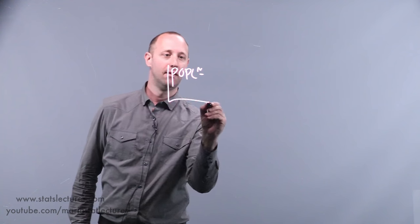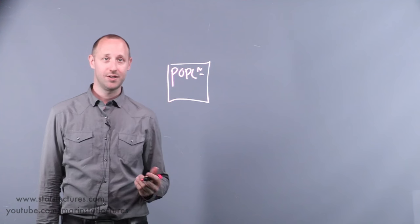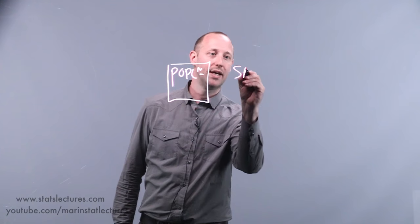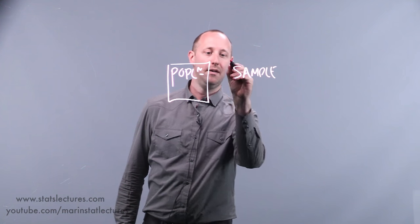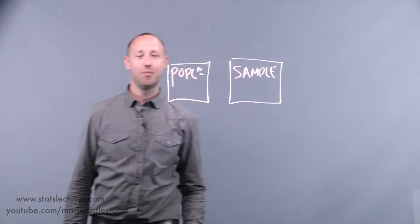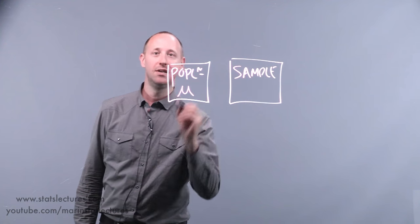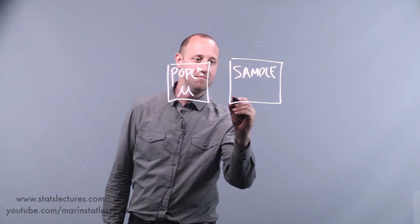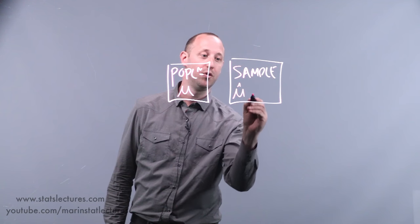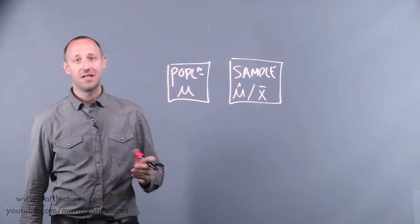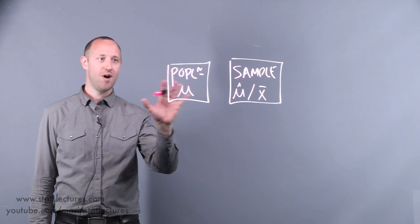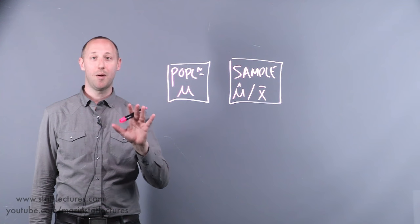In general in the statistical sciences, we're interested in studying some population. Usually the population is too large to study in its entirety, so we take a sample from that population and try to use that to generalize back to the population, to make statements about it. For instance, we might be interested in the mean of the population, and we use our sample mean — mu hat or x-bar — as our best estimate of the population.